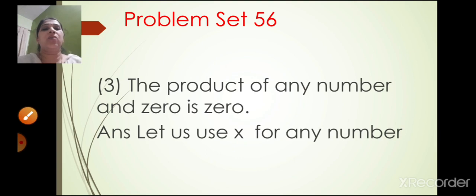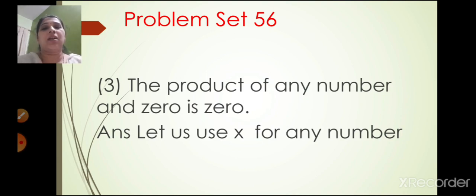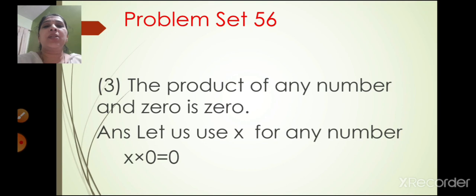The third one: the product of any number and 0 is 0. Product means multiplication. Let us use X for any number. So X into 0 is equal to 0. For example, if X is 9, then 9 into 0 is 0.